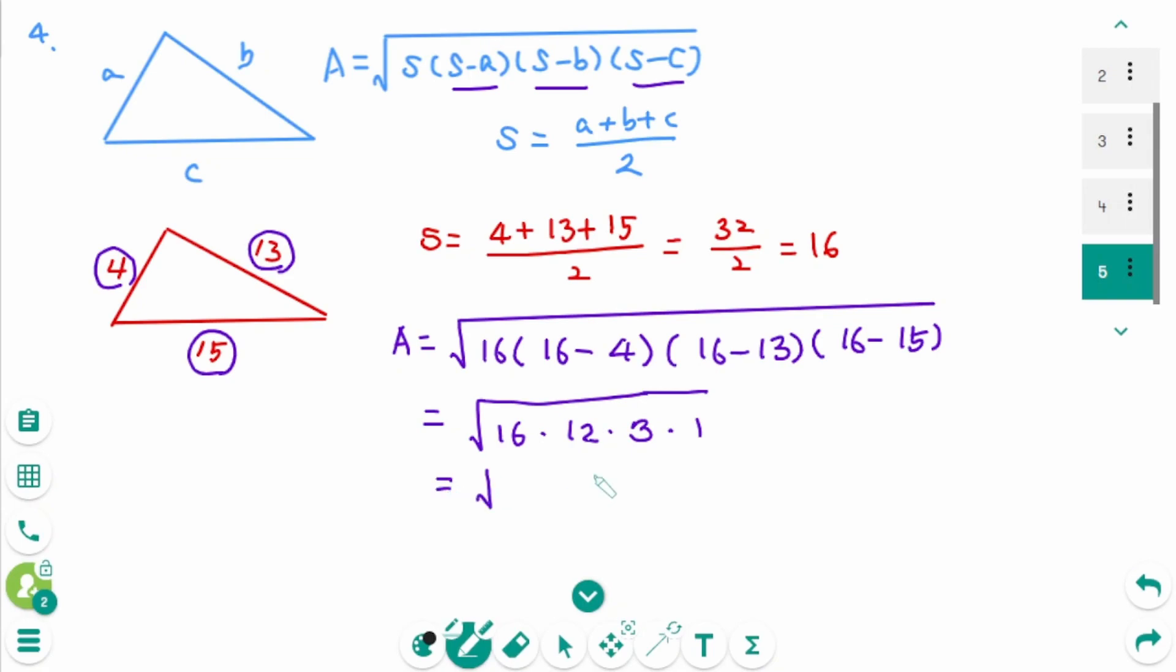Then we can rewrite as 16 equals 4 times 4, 12 equals 4 times 3, then times 3. Equals square root of 16 is 4, square root of 4 is 2, then square root of 9 is 3. Then final answer is 24.